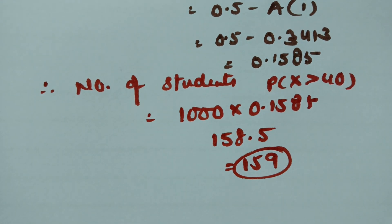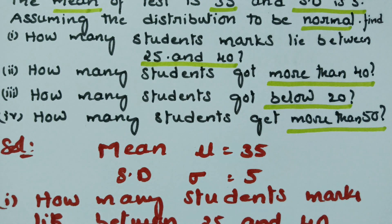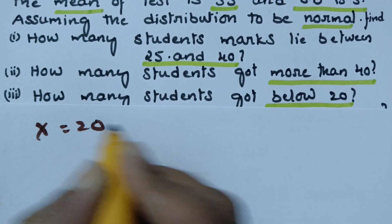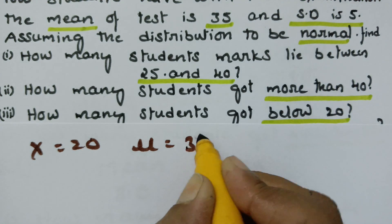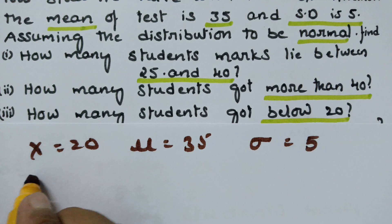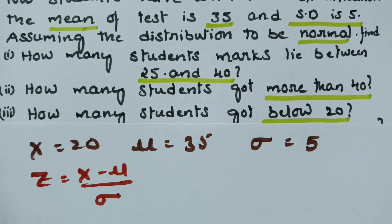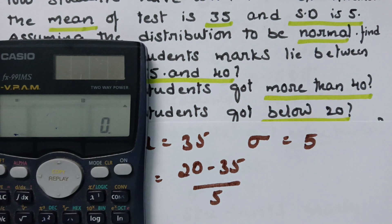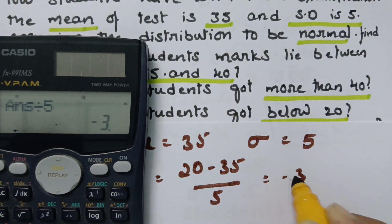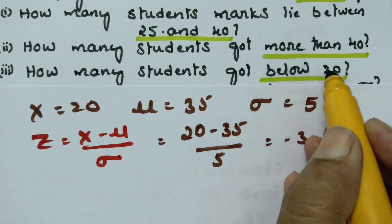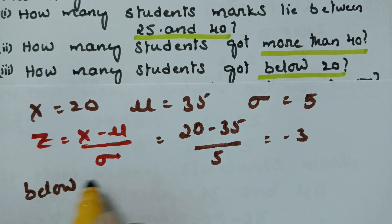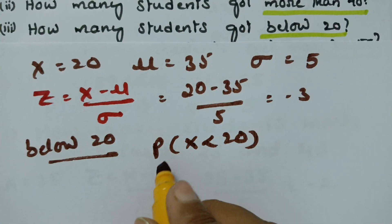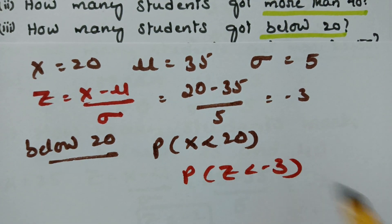The third question: how many students got below 20? For x = 20, mu = 35, sigma = 5: z = (20 - 35) / 5 = -15/5 = -3. So the probability of x < 20 is equivalent to the probability of z ≤ -3.